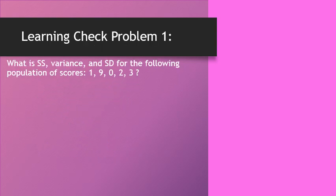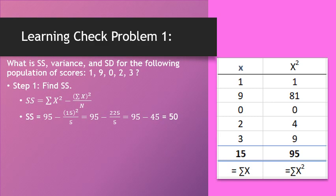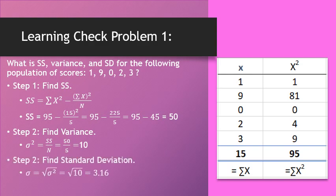Let's do some learning check problems. Pause the video and see if you can work this problem. Step 1 is finding the sum of squares — again, make an x column and an x squared column and sum them both up. Substitute those numbers into your equation: the big number minus the small number squared over n. So 95 minus 15 squared over 5 — there are five numbers in this case — and you work through the problem to get 50. Step 2, find the variance: sum of squares over n is 50 divided by 5, which gives you 10. Find the standard deviation: square root of 10 is 3.16.